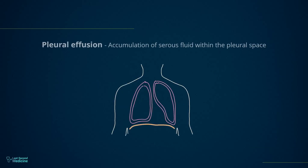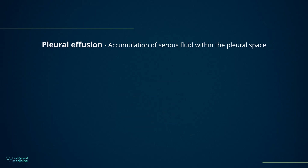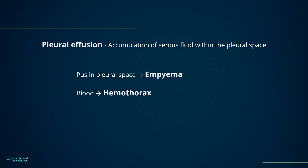Pleural effusion is the accumulation of serous fluid within the pleural space. There are other terms for other types of collections in the pleural space. The accumulation of frank pus is termed empyema, that of blood is hemothorax, and that of chyle is a chylothorax.